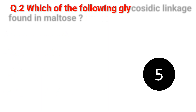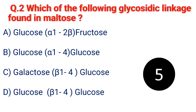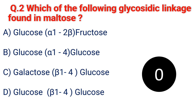Question 2. Which of the following glycosidic linkage is found in maltose? A. Glucose alpha-1,2-beta fructose. B. Glucose alpha-1,4-glucose. C. Galactose beta-1,4-glucose. D. Glucose beta-1,4-glucose. The answer is B. Glucose alpha-1,4-glucose.